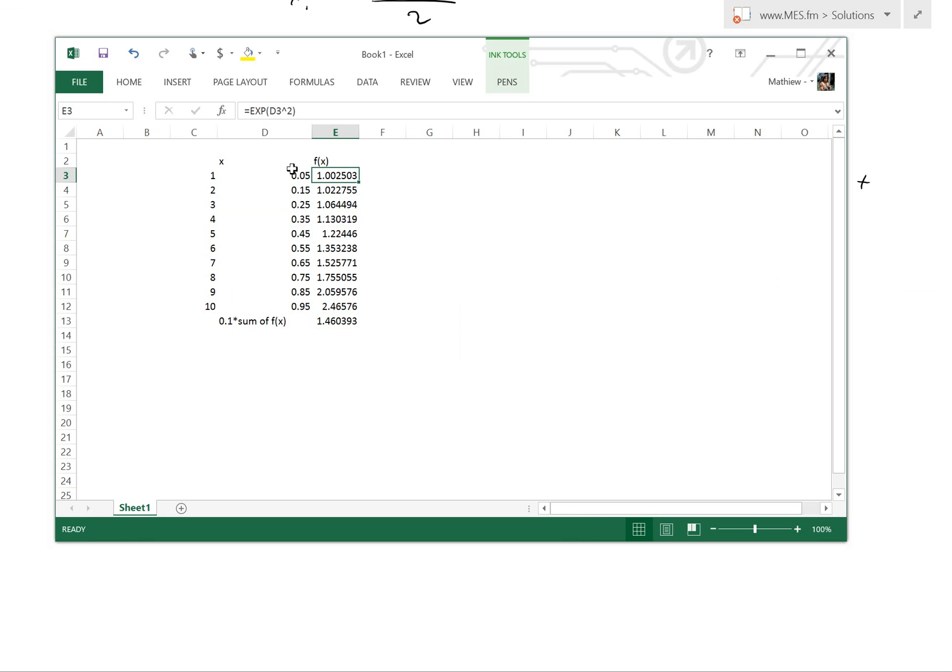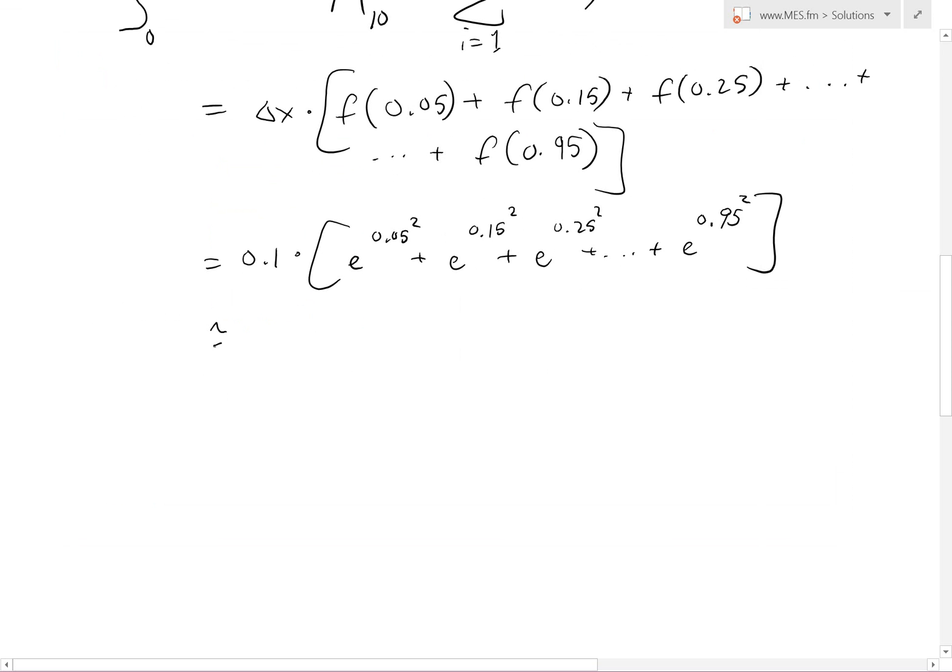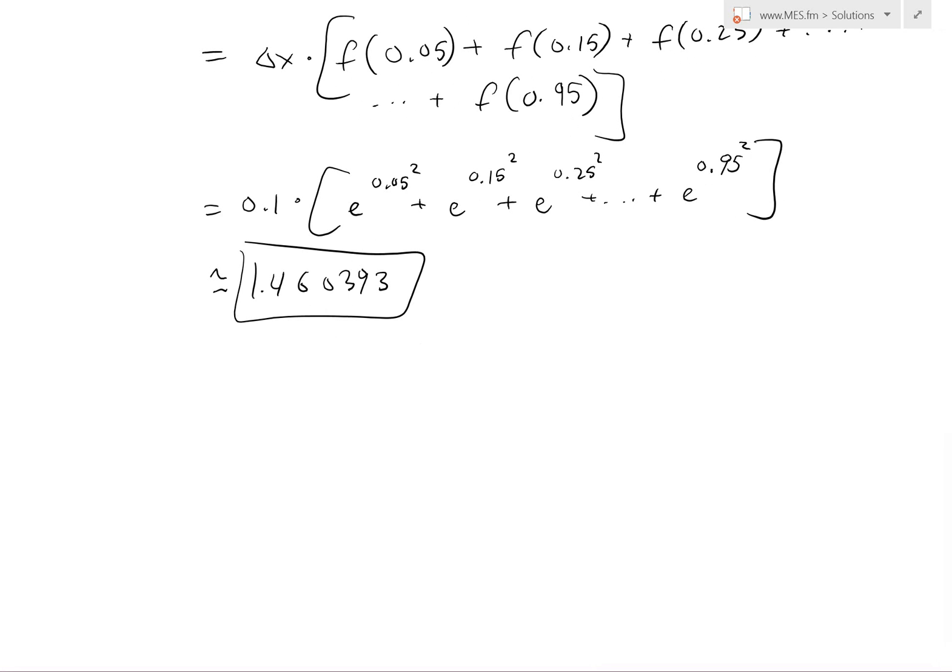There's our delta, there's our x values right here. And then the f of x. This is how you write e to the x squared. You write exp for exponent, and then this power squared, each one squared, sum this all up. So sum, and then times by point one, you get one point four six zero three nine three. So this roughly equals one point four six zero three nine three. This is the closest, or this is enough decimal places that we need for our example. This is good enough.